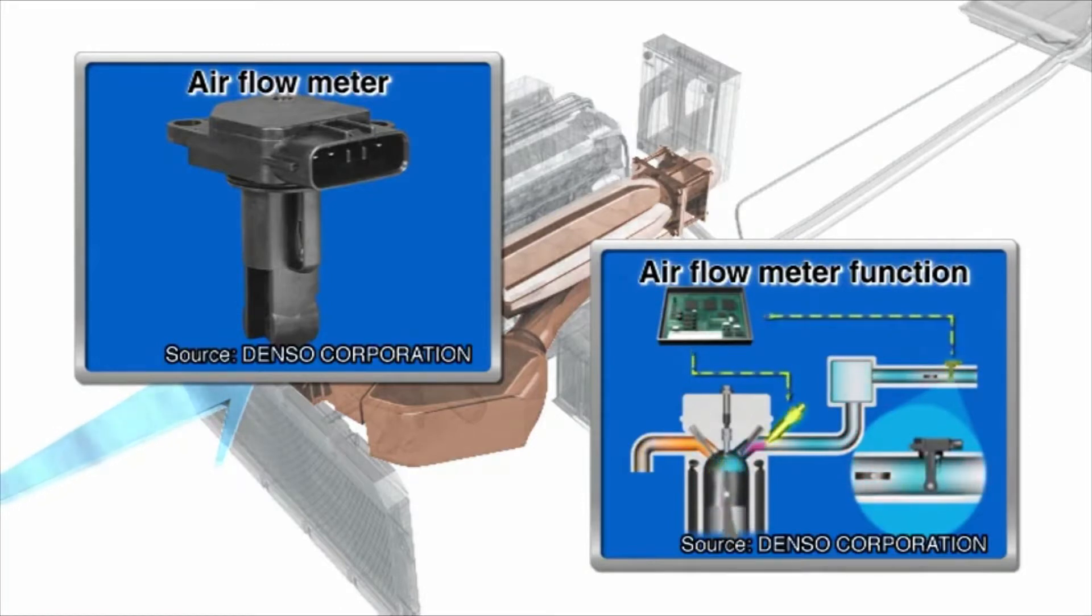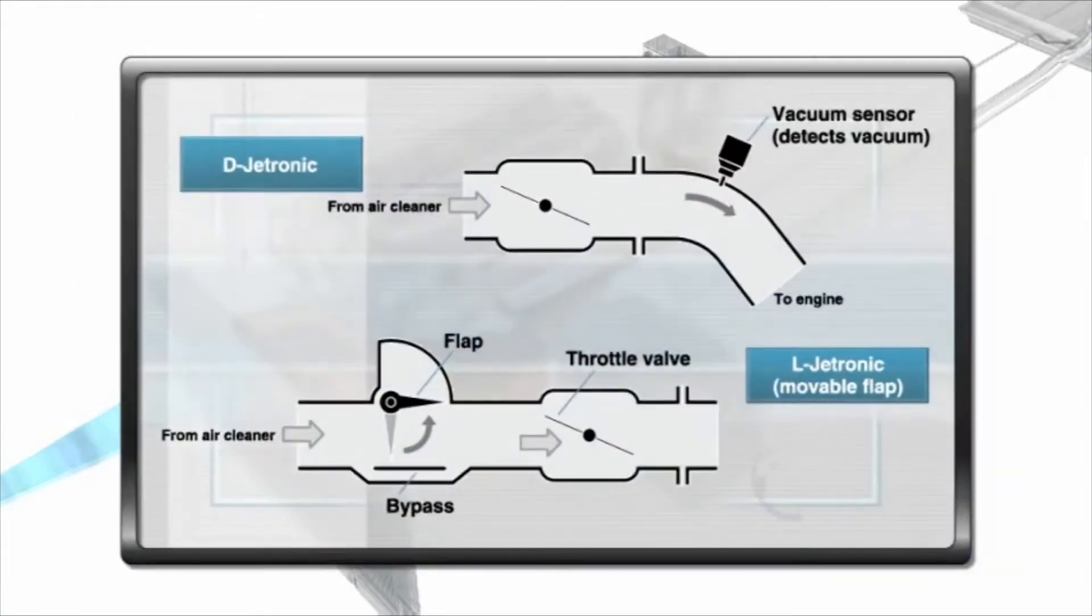Air flow can be measured by the D-jetronic system that measures the speed or density of air flow or by the L-jetronic system that measures the volume of air.